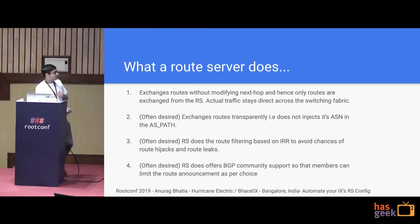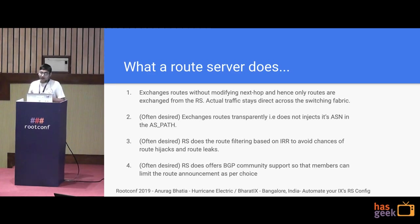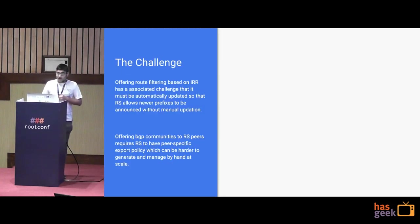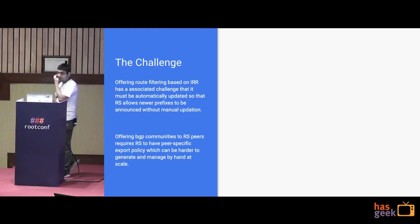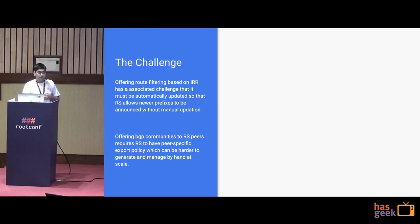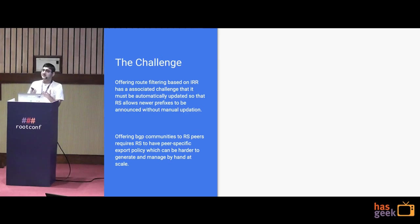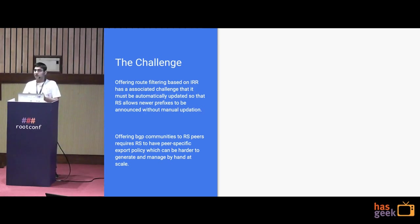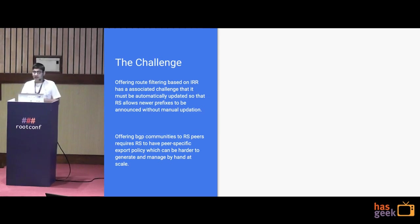The BGP community control was the reason we started working on this project — the other two options I can still make work without automating, but the fourth option is really painful. IRR is painful too, but one can somehow manage. The challenge is: how do you generate filters based on IRR? It's not a one-time thing — you have to do it regularly, either every few hours or at most a day. You should regenerate the whole filtering config, and you also need to offer peer-specific export rules. By design, a route server has import policies specific to each peer, but a common export policy. If you want to offer BGP community control, you must have separate export policies for each peer, which becomes very tedious to do by hand.